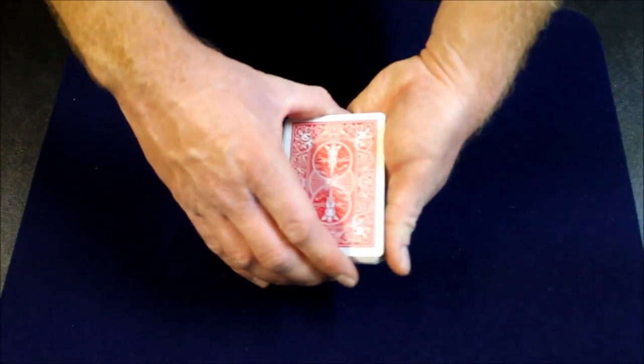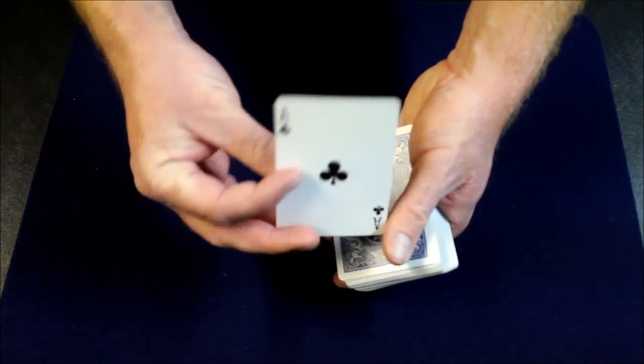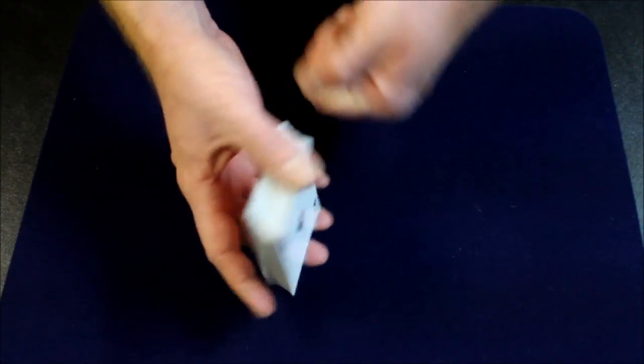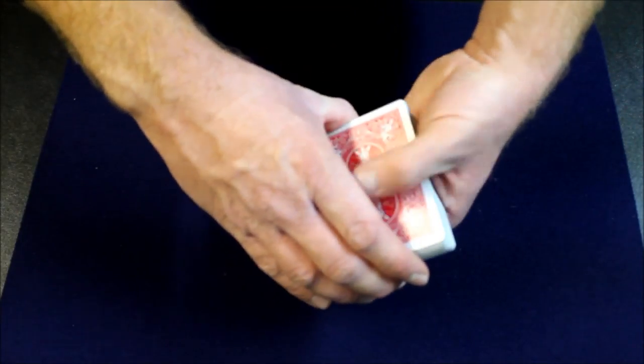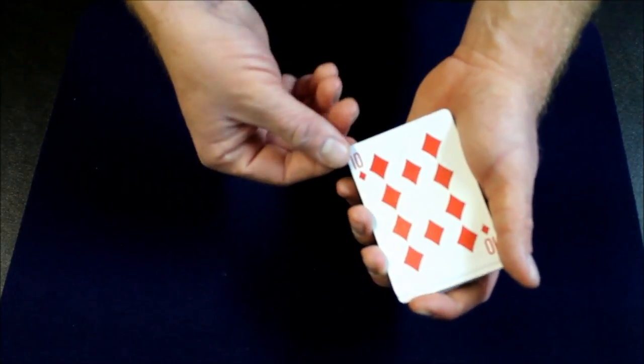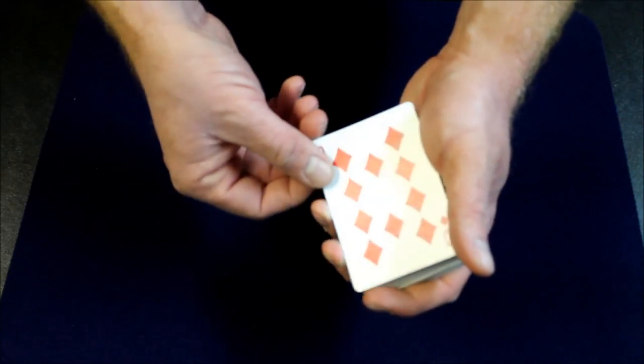So now the position you're in is you have the red card, spectator's card, and you have the other Ace of Spades on the bottom. So what you're gonna do is you're going to do a double lift. Showing that the red card is the spectator's card.